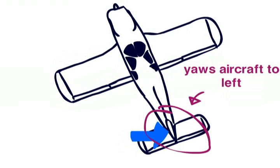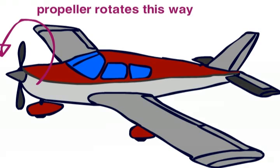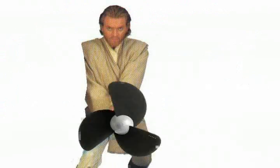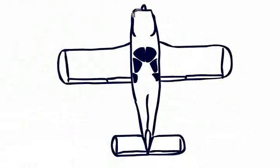A clockwise rotating propeller will also want to rotate the aircraft left due to torque reaction. This is like holding a fast spinning fan. It is revolving one way and is wanting you to revolve in the other. This also makes the aircraft want to yaw and roll to the left.